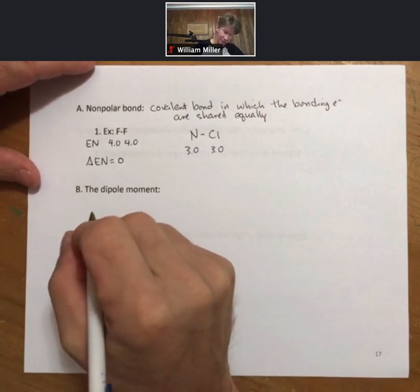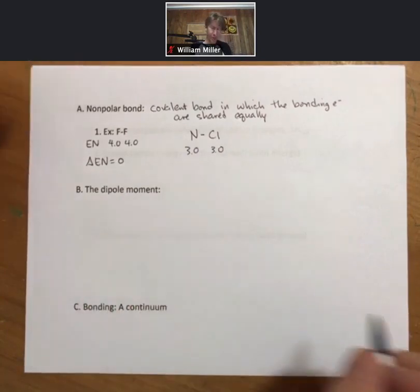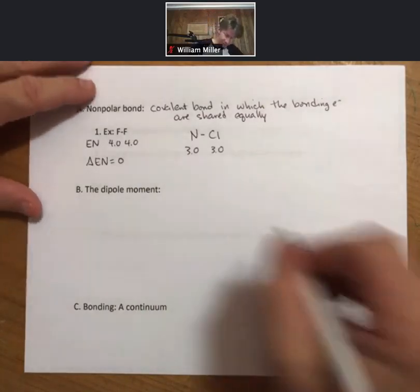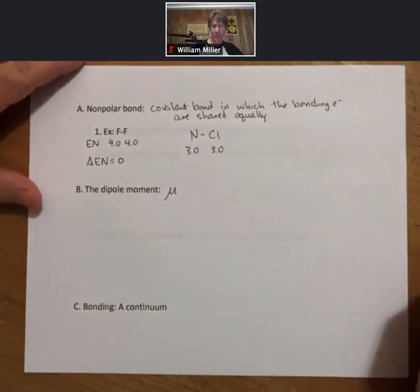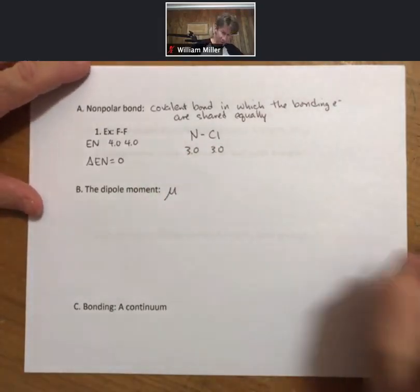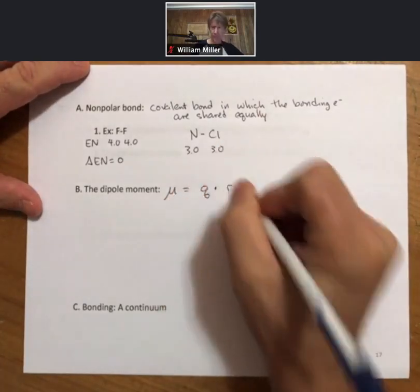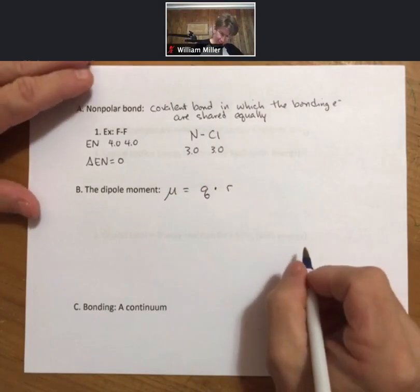You can go deeper into polar versus nonpolar to determine how polar a bond is. If you do that, you use something called the dipole moment, which is lowercase Greek letter mu. Mu equals q times r, where q is the charge.